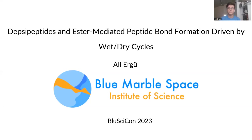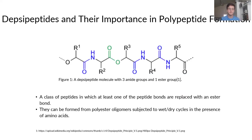Hello everyone, this is Ali Ergül and today I'll be talking about DEPS peptides and a plausible mechanism for peptide bond formation in prebiotic earth. DEPS peptides are basically a class of peptides in which at least one of the peptide bonds is replaced with an ester bond. These DEPS peptides can be formed from polyester oligomers when these oligomers are subjected to wet-dry cycles in the presence of amino acids.